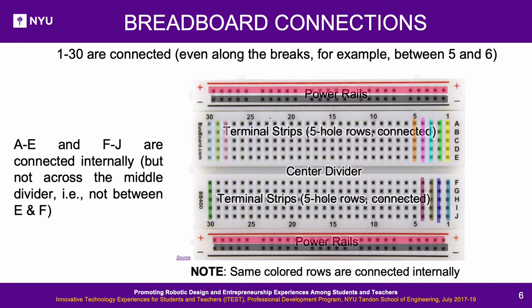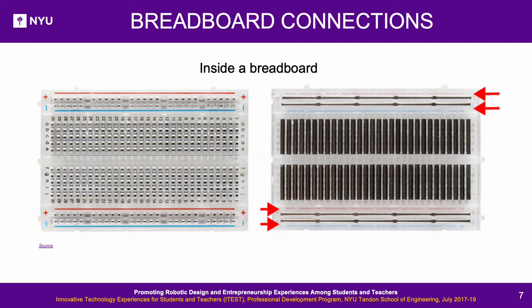Breadboard connections: A to E and F to J are separated by a center divider. However, 1A, 1B, 1C, 1D, and 1E are connected by a single metal strip — and so are 1F, 1G, 1H, 1I, and 1J. Similarly, 2A to 2E are connected, and 2F to 2J, and so on. The image on the right shows the inside of a breadboard, giving a clearer view of the connections under its surface. If possible, it is advisable to use a transparent breadboard that makes the metal strips somewhat visible to help avoid confusion.